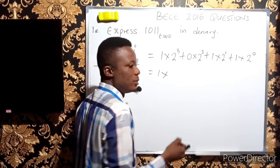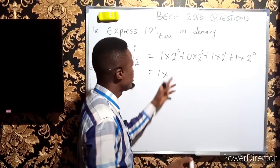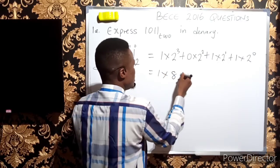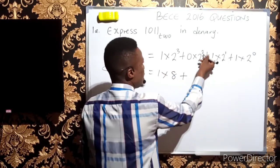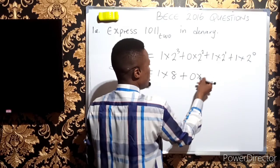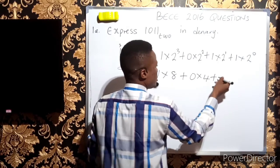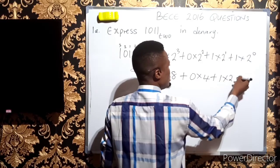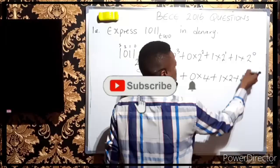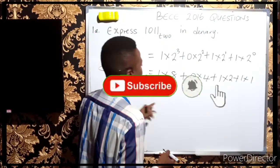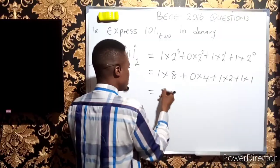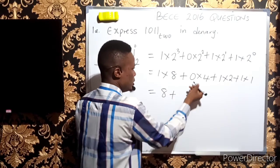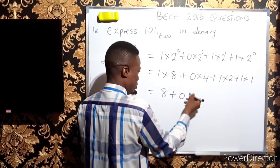Plus 0 × 2² is 0 × 4, plus 1 × 2¹ is 1 × 2, plus 1 × 2⁰ is 1 × 1. So we have 1 × 8 gives us 8, plus 0 × 4 gives us 0, plus 1 × 2 gives us 2, plus 1 × 1 gives us 1.